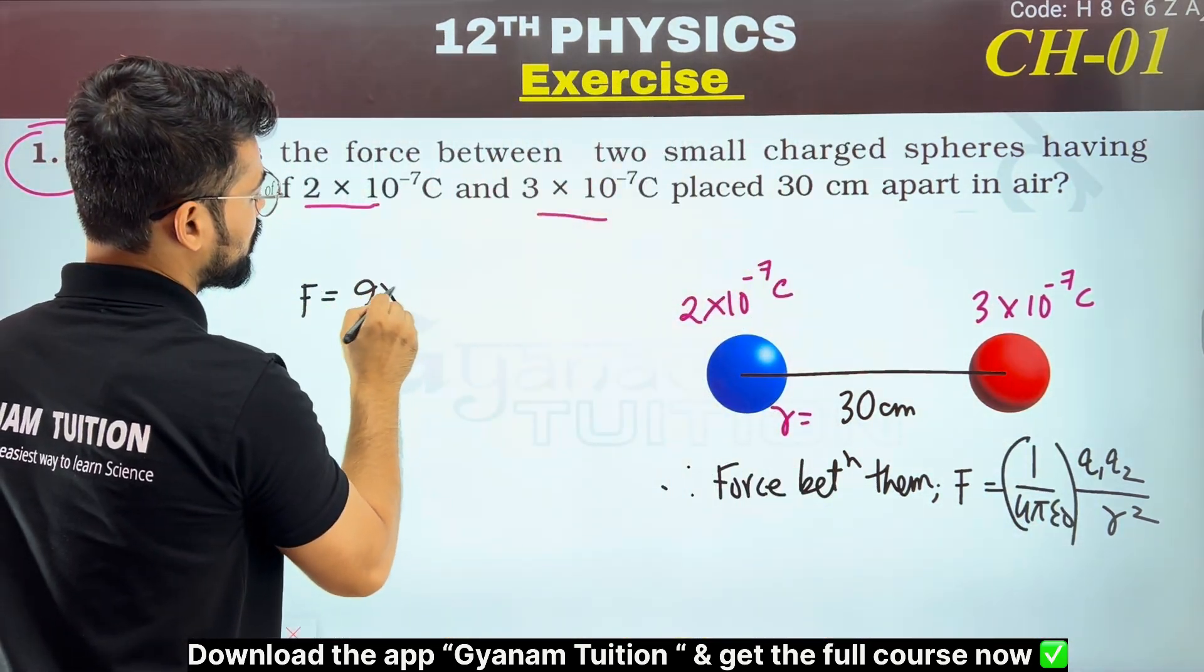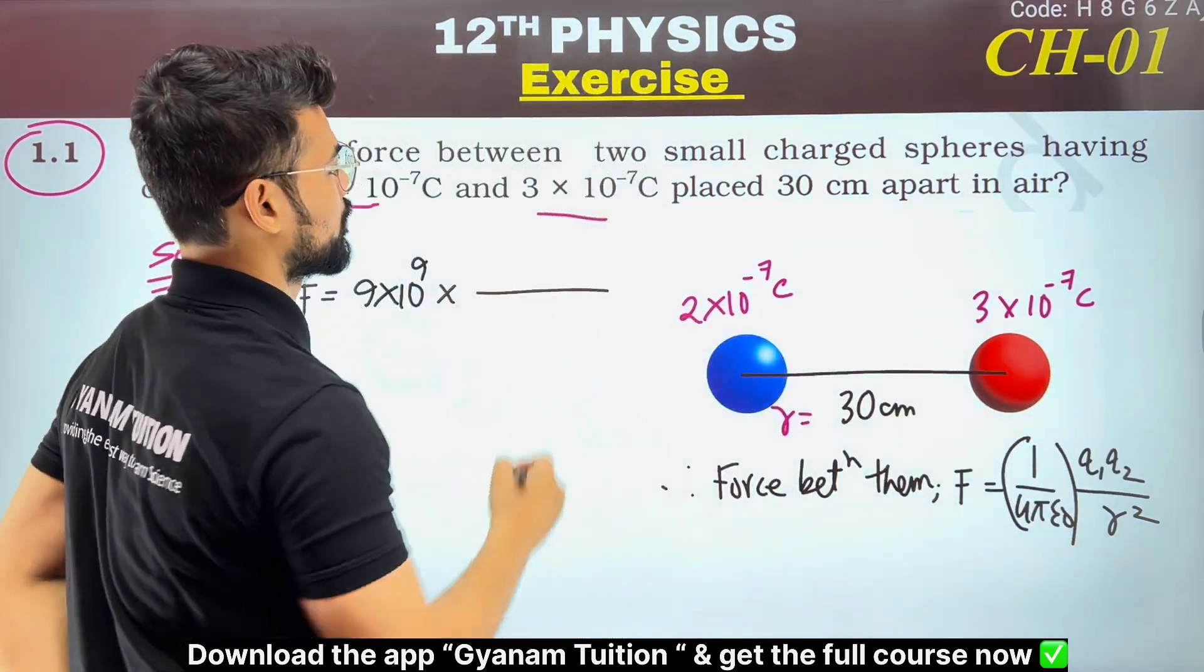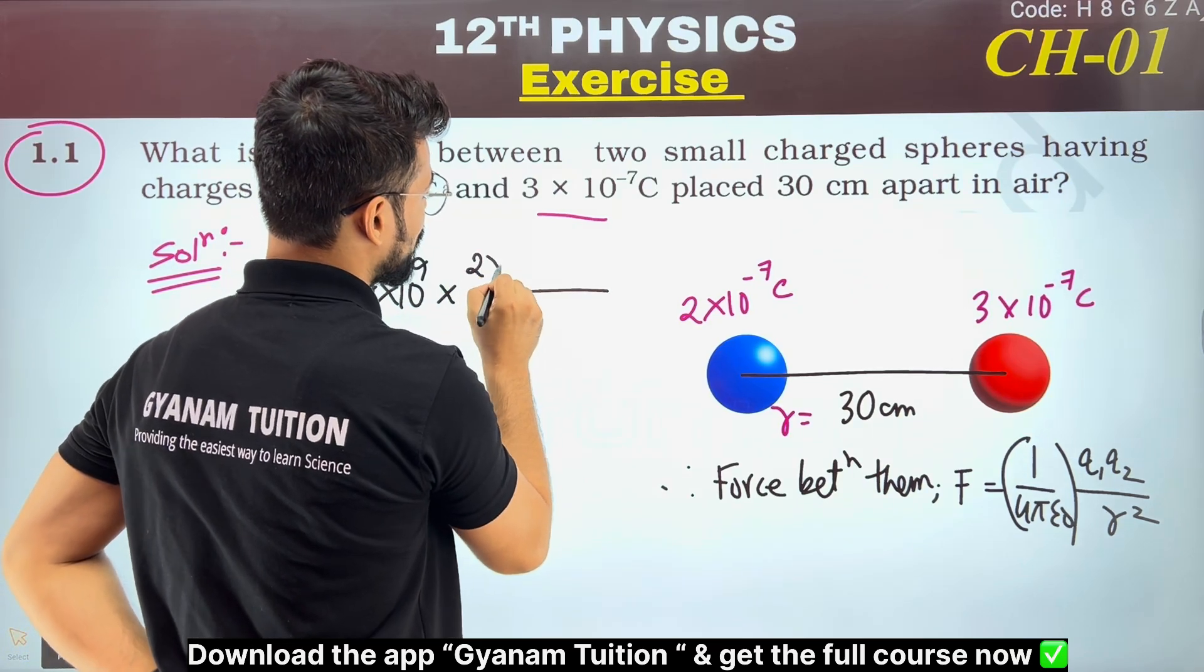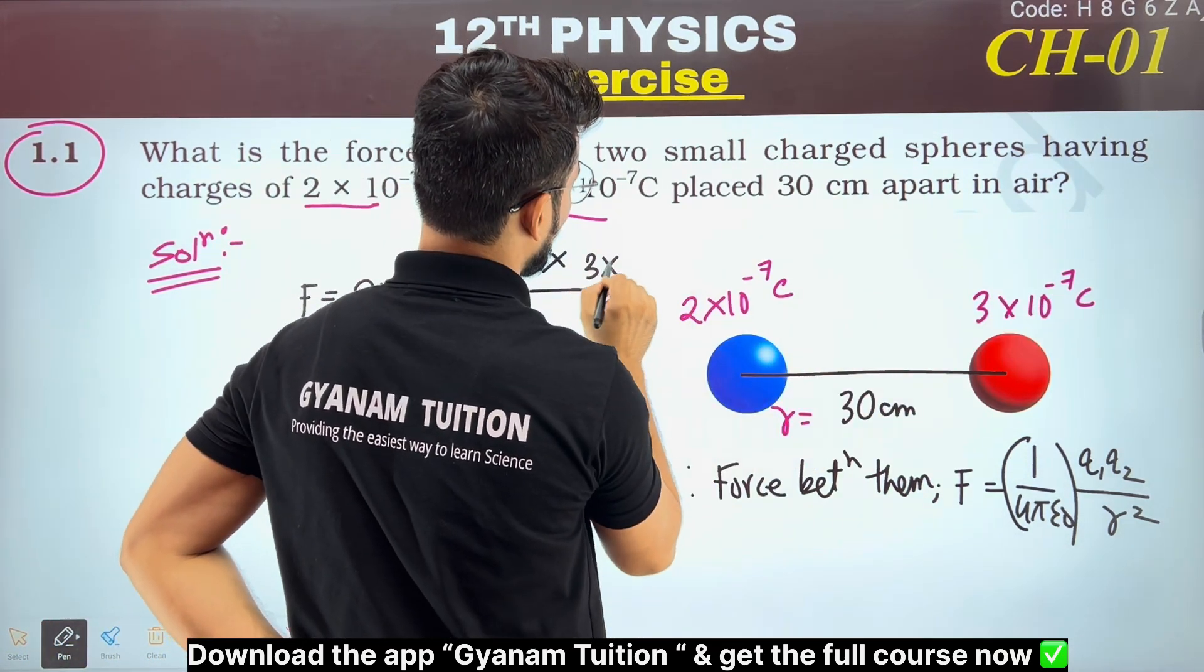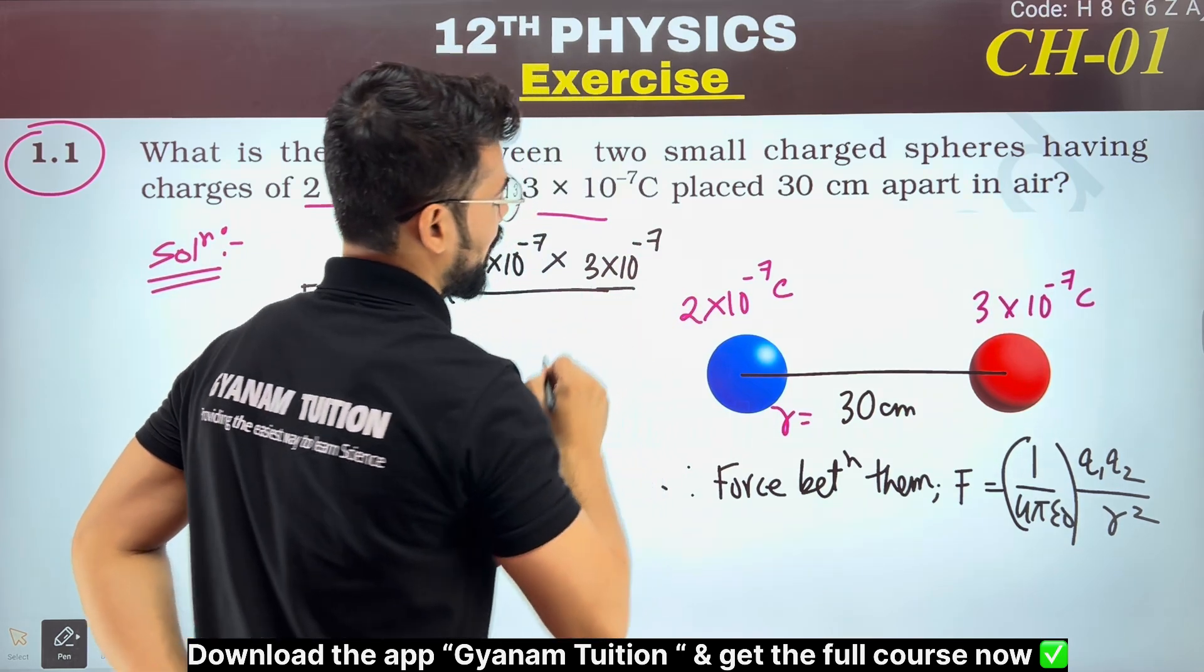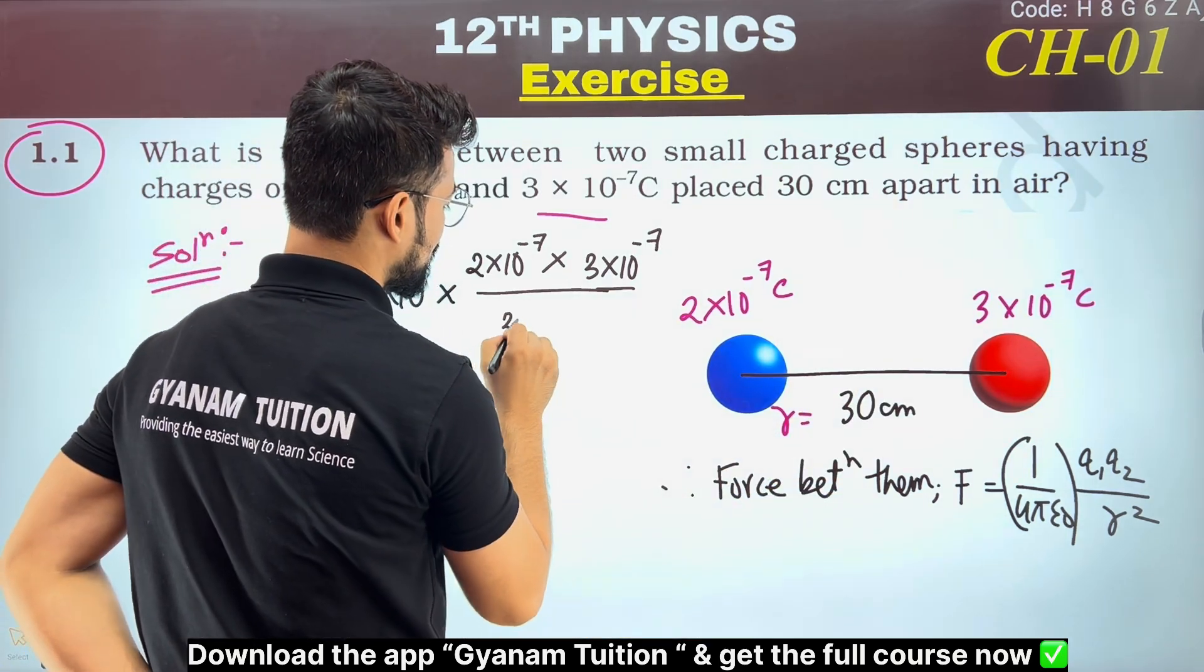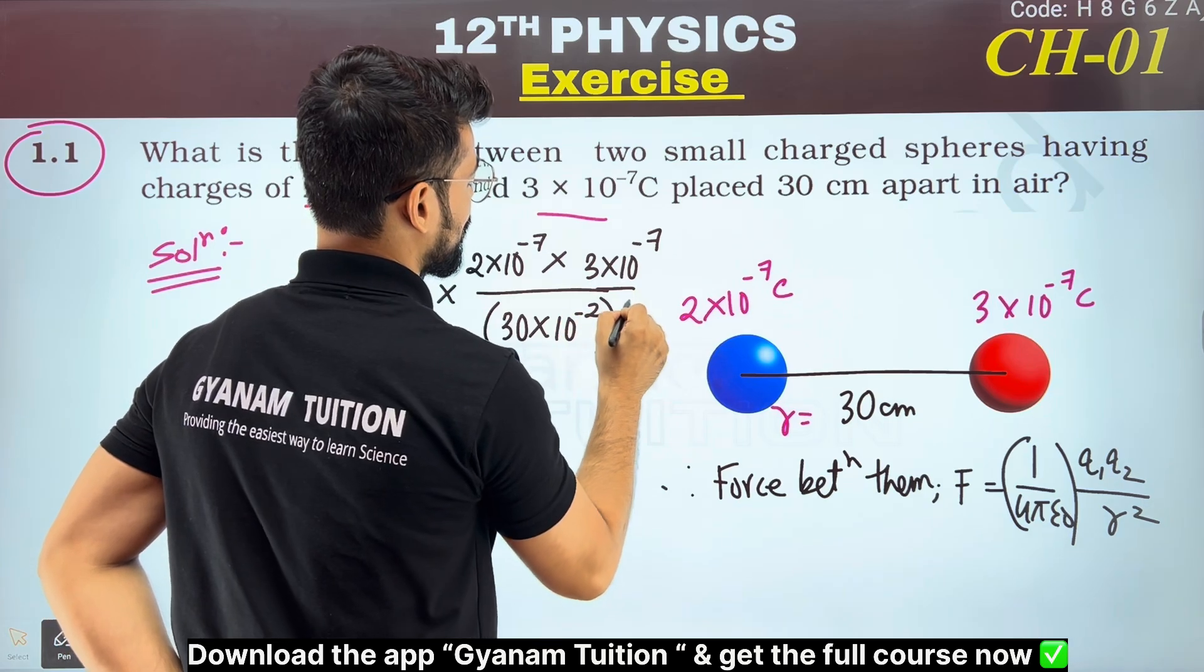9×10⁹ times q₁ times q₂. The values of q₁ and q₂, we just multiply them: 2×10⁻⁷ times 3×10⁻⁷. For r squared, the value is 30 centimeters in meters, which is 30×10⁻² squared.